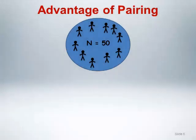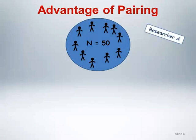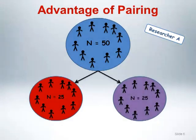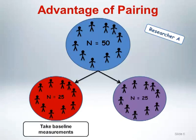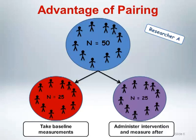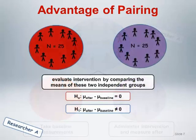To further illustrate the advantage of pairing, consider the following situation. Suppose two collaborating researchers, researcher A and researcher B, have a cohort of 50 randomly selected subjects and want to test the impact of a new intervention. Researcher A proposes splitting the sample into two equal groups of 25 subjects: the red group takes baseline measurements while the purple group receives the intervention and is measured afterward, then the two independent group means are compared.